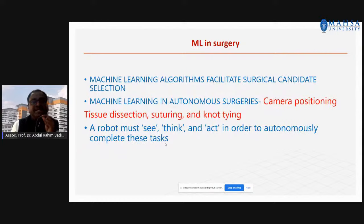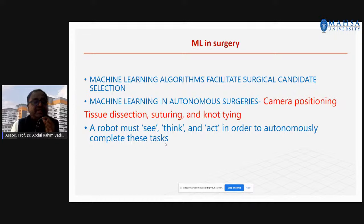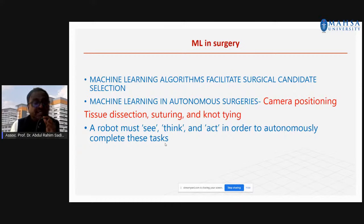Machine learning algorithms facilitate surgical candidate selection. In autonomous surgeries, ML is used for camera positioning, tissue dissection, suturing and knot tying. In order for the robot to think and act independently, we have to develop a machine learning model and integrate it with the robot. Without a surgeon, AI can take the position of surgeon and make the robot see, think, and act to complete the task autonomously. This is the application of AI in surgical robotics.